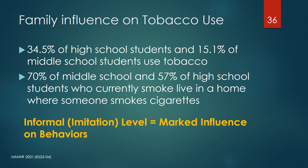This is an example of the importance of informal imitation level learning, demonstrating family influence on tobacco use reported in the MMWR in 2001. In that study, 34.5% of high school students and 15.1% of middle school students used tobacco. Yet 70% of middle school and 57% of high school students who currently smoked lived in a home where someone smoked cigarettes. Smoking of students was markedly higher in families that smoked. Transfer of messages and meaning, whether good or bad, is more effective in many instances through the family — relating to the informal imitation level of learning.